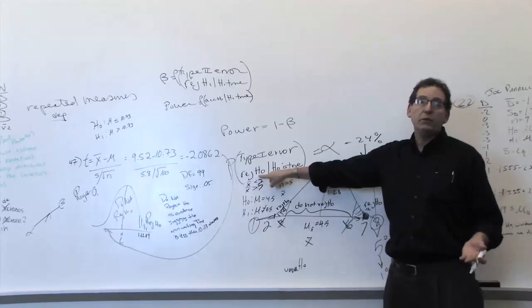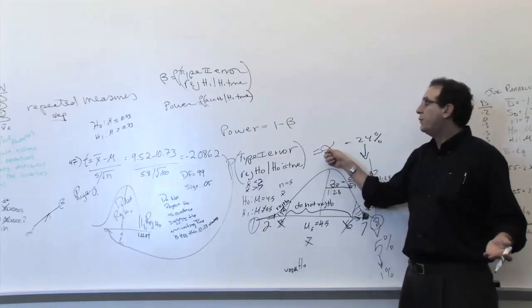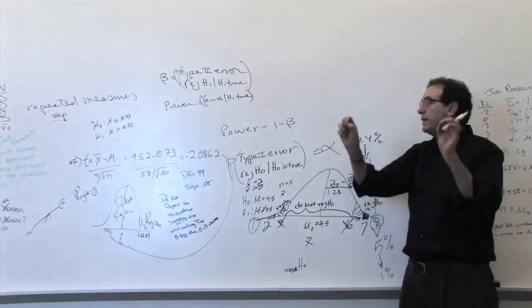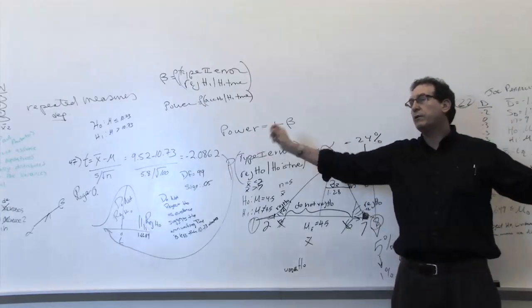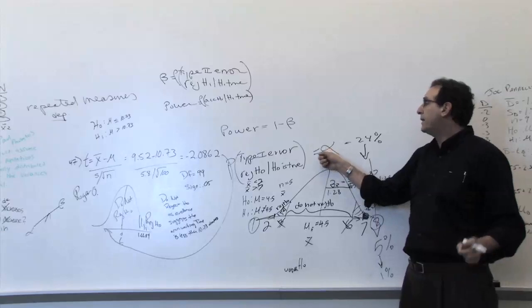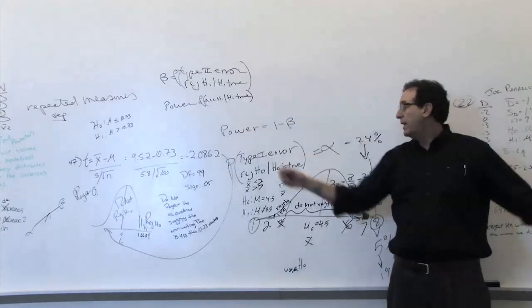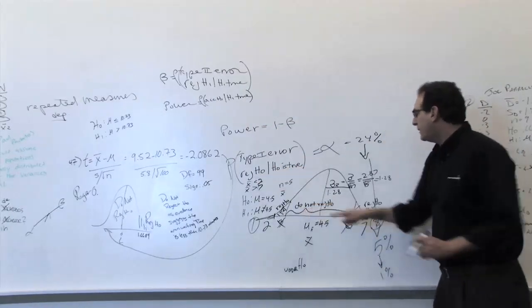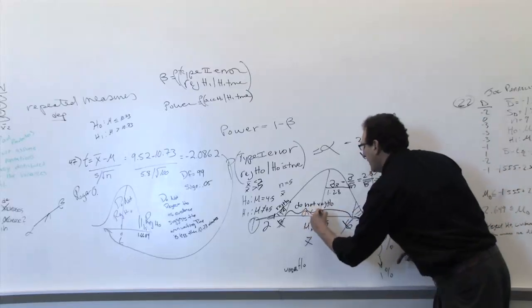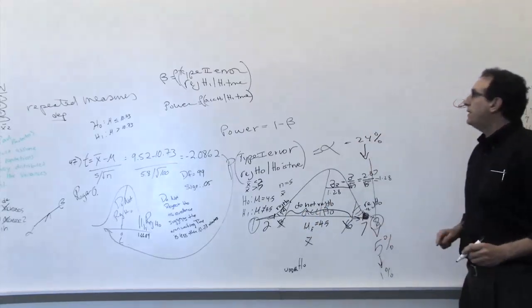If you make it really easy to accept H0, you're hardly ever going to reject it. If you hardly ever reject it, then you're going to have a small alpha, because alpha is how often you reject it. So it makes sense, by making the region really liberal, you're going to have a small alpha. What happens when you make the region really liberal, making it really easy to accept H0? Remember, this is the accept H0 region, essentially.